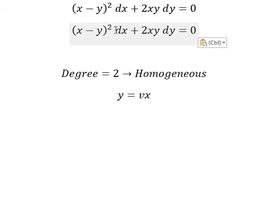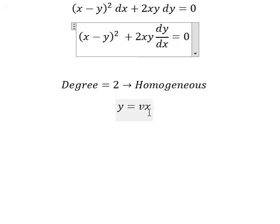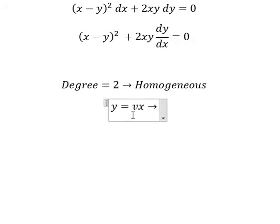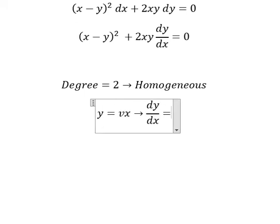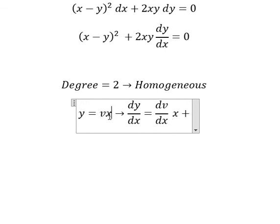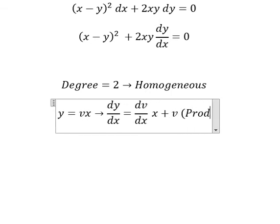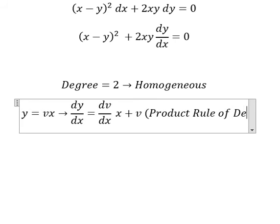Next we need to divide both sides by dx. If we do the first derivative for both sides, we get dy over dx. Then for the right side we apply the product rule: the derivative of vx gives dv over dx multiplied by x, plus v times the derivative of x which is one. So we have dv/dx · x + v from the product rule of derivatives.